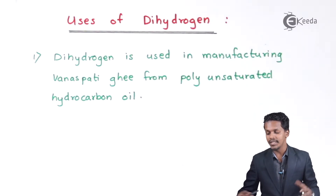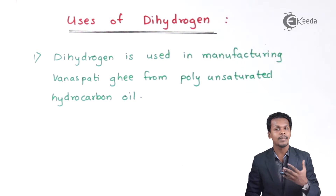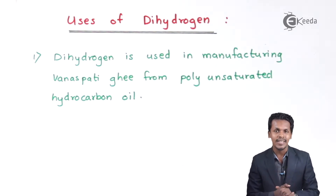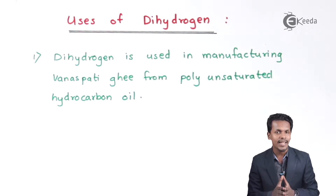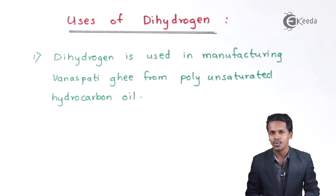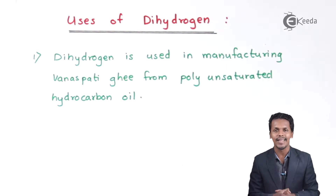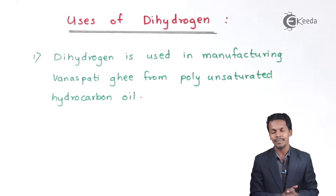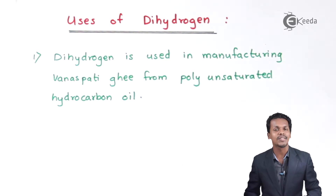The first point is that dihydrogen is used in the manufacturing of Vanaspati Ghee from polyunsaturated hydrocarbons. Oils are basically polyunsaturated molecules, and what we have to do is treat them with hydrogen. Any carbon-carbon double bond or unsaturated bond present is broken with the help of H₂. By hydrogenating such oils we obtain Vanaspati Ghee, which is in solid form, while the original oil is in liquid form.